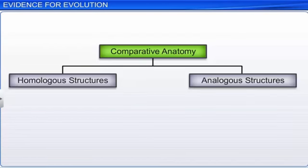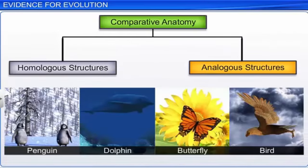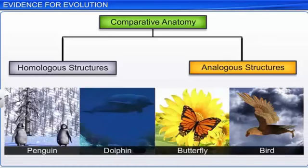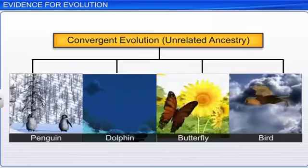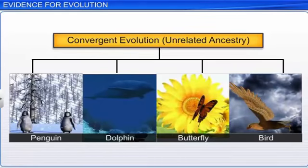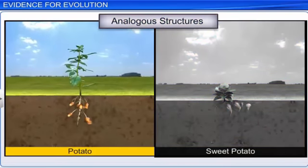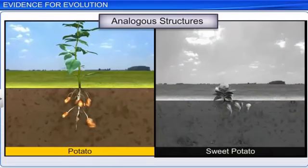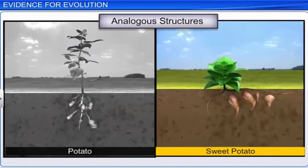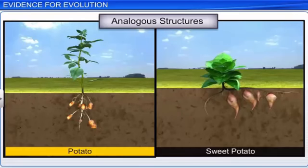On the other hand, when anatomically different structures evolve to perform similar functions in different organisms, they are known as analogous structures. For example, the flippers of penguins and dolphins and the wings of butterflies and birds are analogous structures. Since these animals have similar structures but unrelated ancestry, they point to convergent evolution. In plants, examples of analogous structures are potato and sweet potato, which are modified stem and modified root respectively.